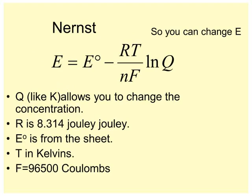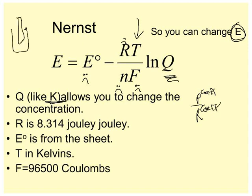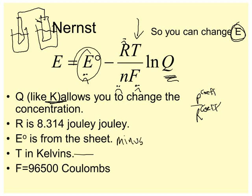Nernst equation is nice. We can change the voltage by changing some other things. The temperature can affect the voltage. R is a constant, Faraday's constant, N is going to be a constant. E naught, remember, is at standard conditions. So you can change it by changing the temperature or changing Q. For the Q part, Q is the same as before, the like KQ, allows you to change the concentration. It's products over reactants raised to the coefficients. But if you haven't noticed, when we do these things, one of my reactants is always a solid, or usually a solid. E naught is from the sheet, you do the little subtraction things. Temperature needs to be in kelvins, and 96,500 is cool. So let's hop to it.